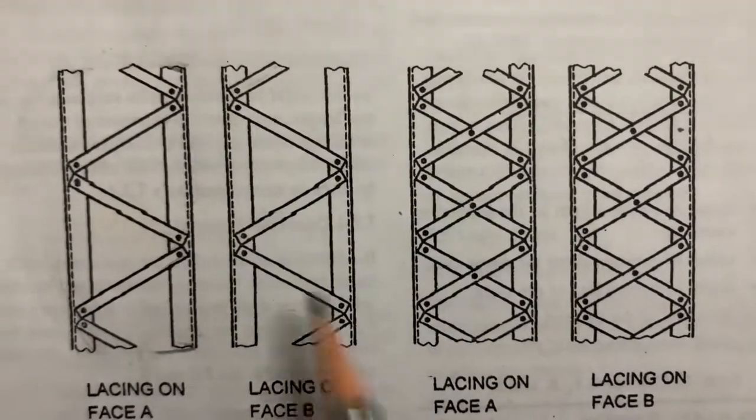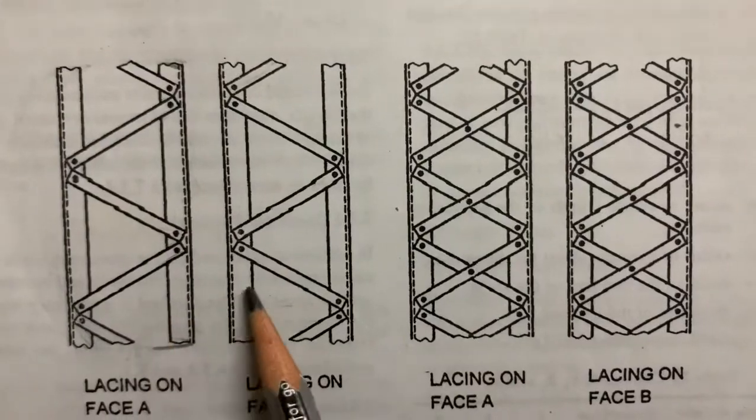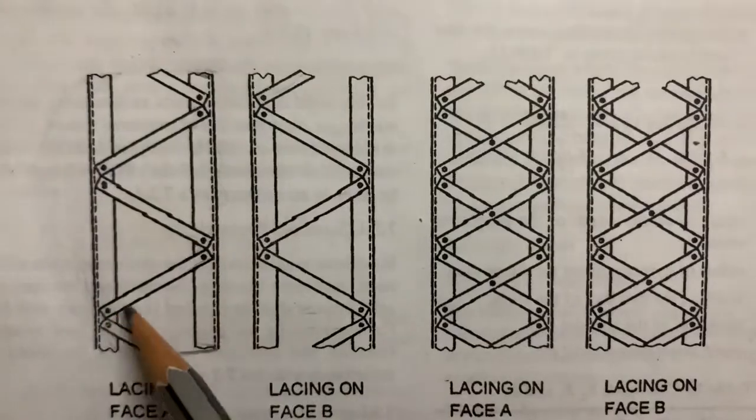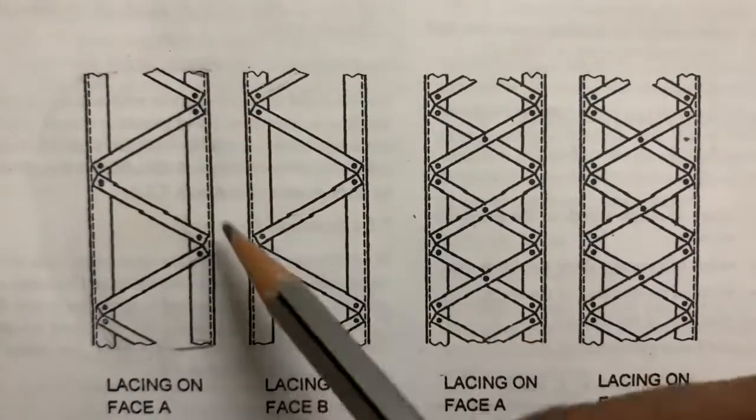These two are lacing members - single lacing and double lacing. This inclined portion is called laced members or lacing flats. These are the main members.